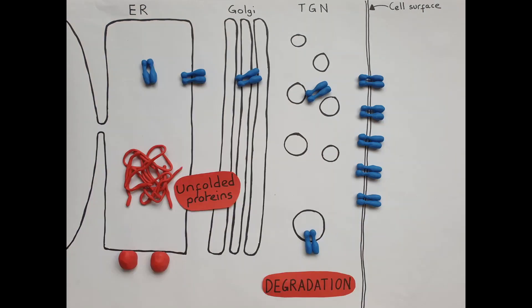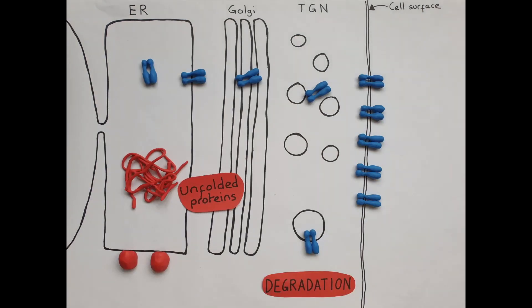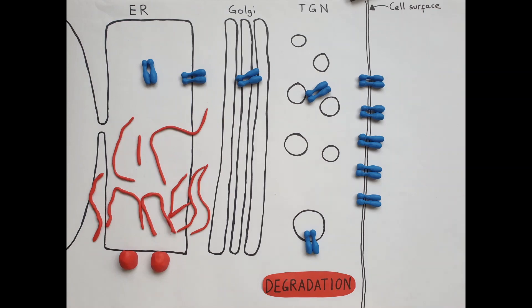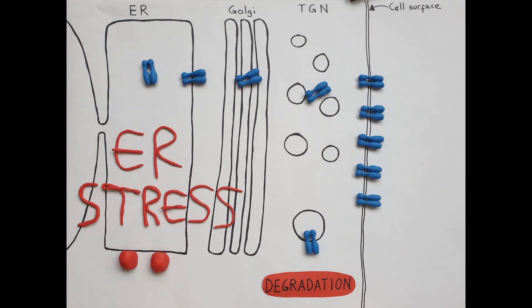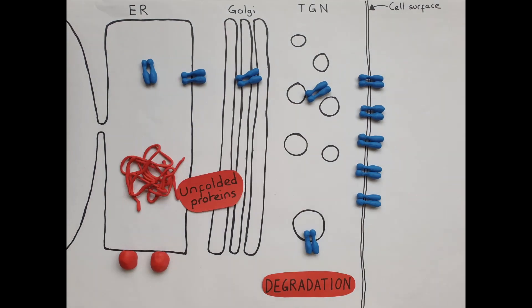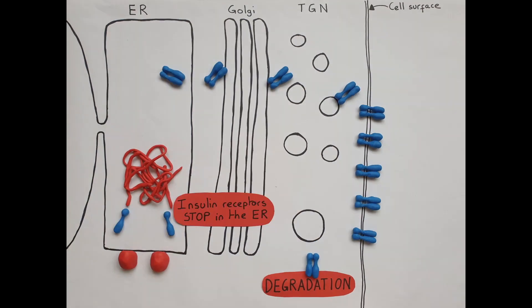In obesity, accumulation of unfolded proteins in the ER causes ER stress. We found that ER stress inhibits the processing of insulin receptors in the ER.